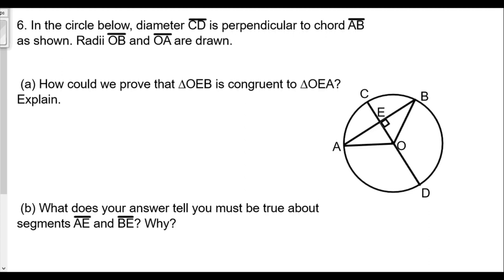In the circle below, diameter CD is perpendicular to chord AB, forming a right angle. Radii OB and OA are drawn. How can we prove that triangle OEB is congruent to triangle OEA?